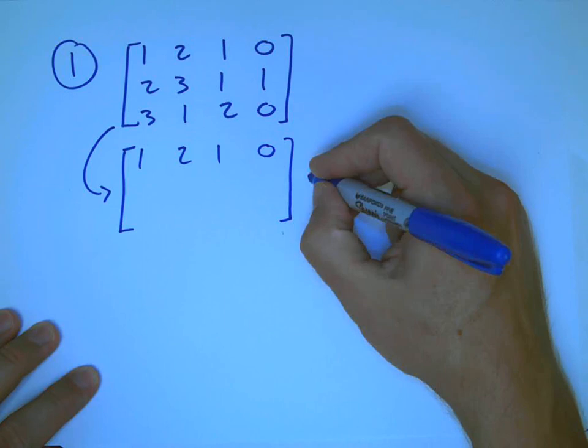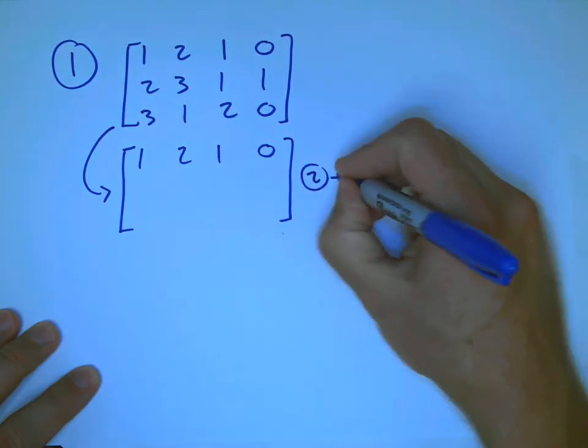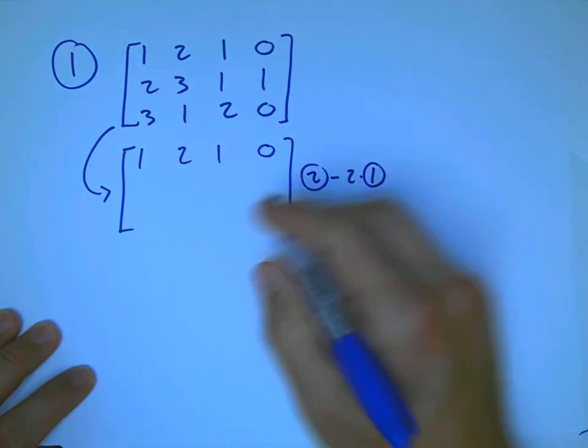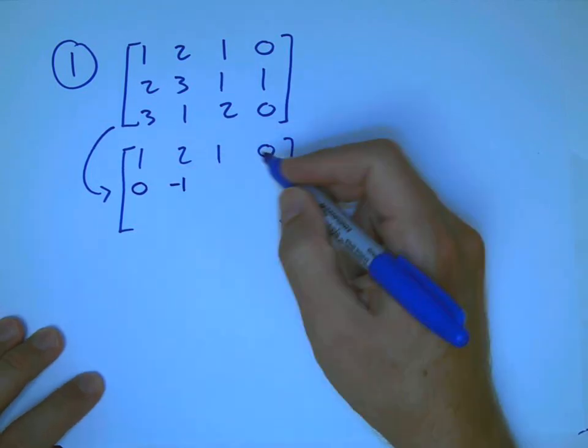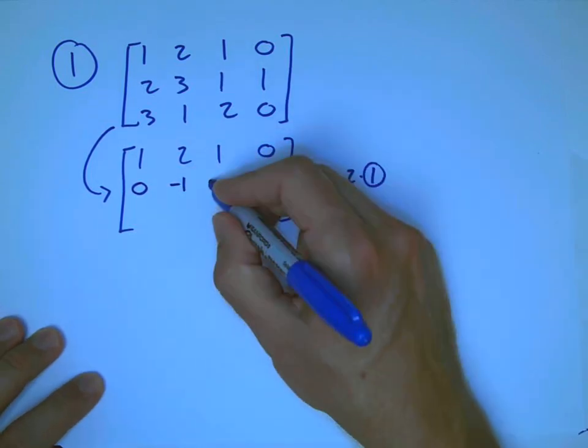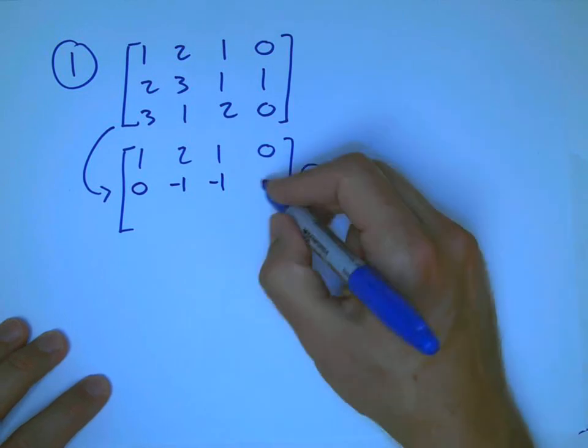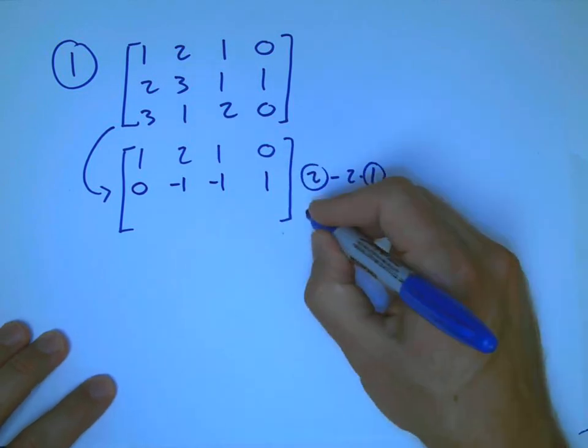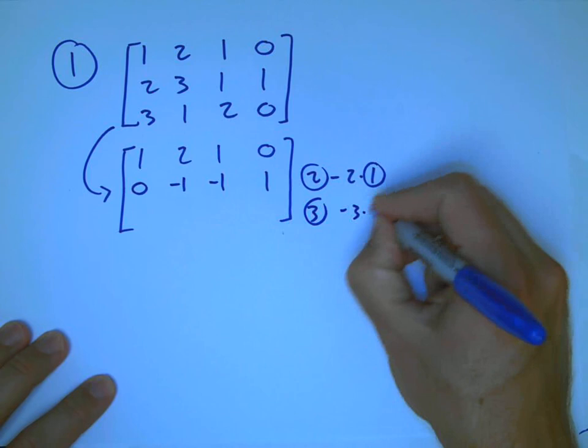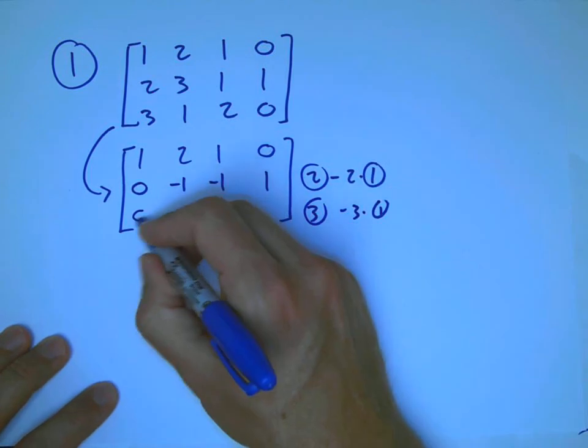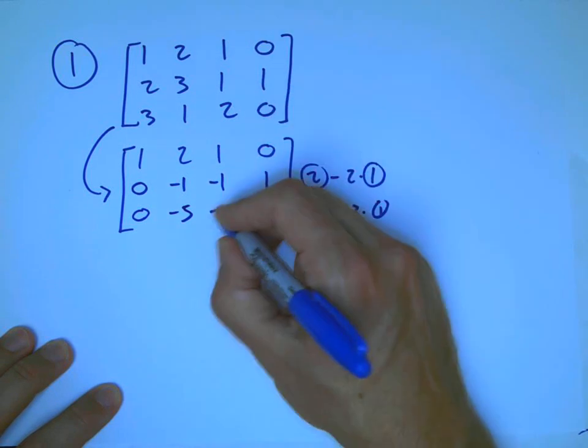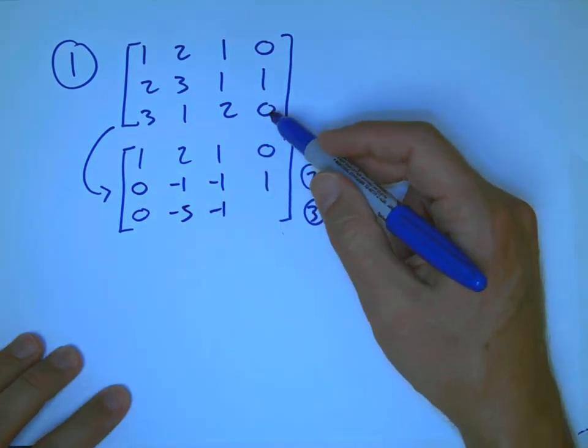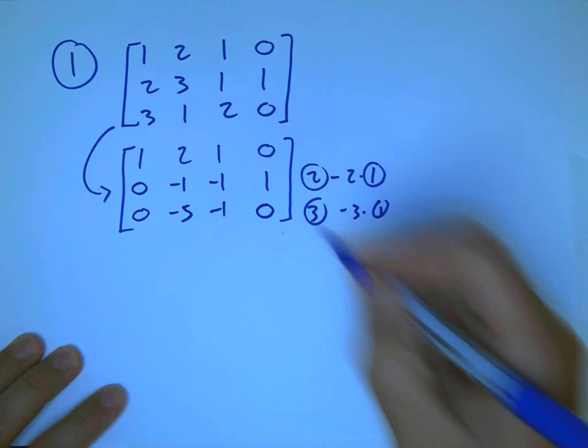So I'm going to take row 2 minus 2 times row 1. So that's going to be 0, minus 1, minus 1, 1. And I'm going to take row 3 minus 3 times row 1. That's going to be 0, 1 minus 6 is minus 5, 2 minus 3 is minus 1 again, and 0 minus 0 is 0.